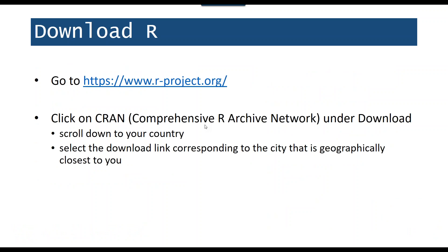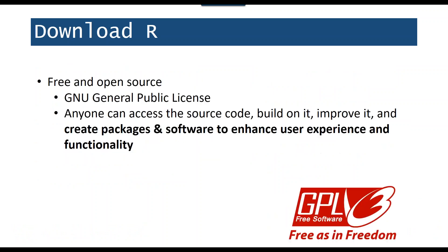To download R, you go to r-project.org, click on CRAN, go to your country, and select the download link for the city closest to you — this detail is in your handout. R is licensed under the GNU General Public License, which means that unlike Excel or Photoshop, anyone can access the source code, build on it, improve it, and create packages for it. R was created in 1995 — over 20 years ago — but because anyone can build packages for it, it continues to be used and its user base continues to grow. We'll be talking about packages in session 2.